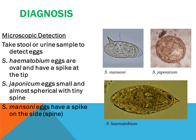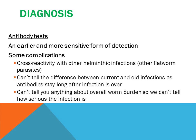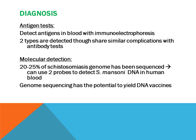Diagnosis of Schistosomiasis. Microscopic detection: a stool or urine sample is taken to detect the eggs. The eggs of S. haematobium are oval and have spikes at the tip. Those of S. japonicum are small and almost spherical with tiny spikes. Those of S. mansoni have spikes on the side. The diagram illustrates S. mansoni, S. japonicum and S. haematobium eggs. Other methods include antibody testing, an early and more sensitive form of detection, as well as antigen testing and molecular detection.